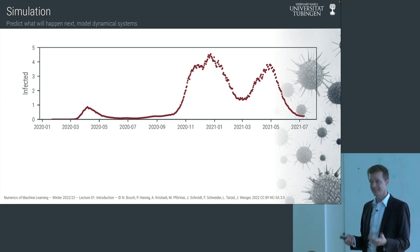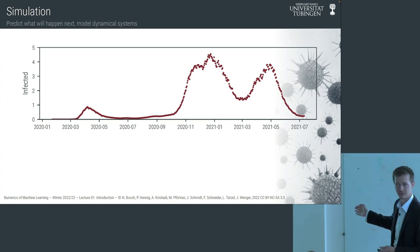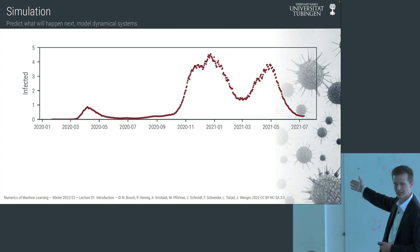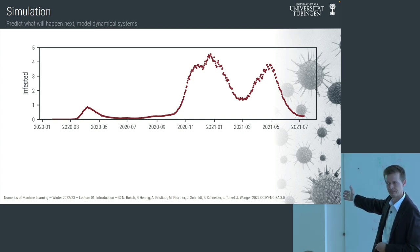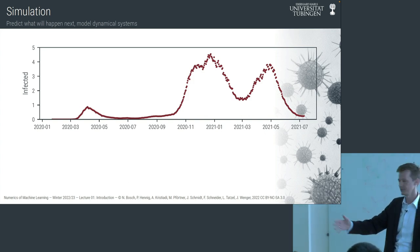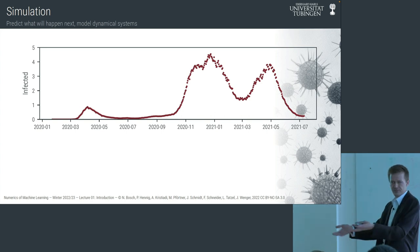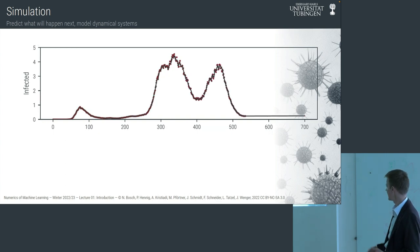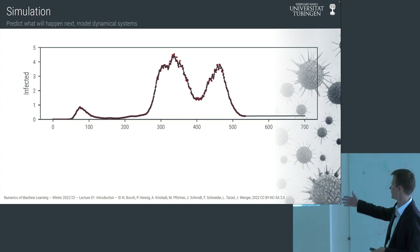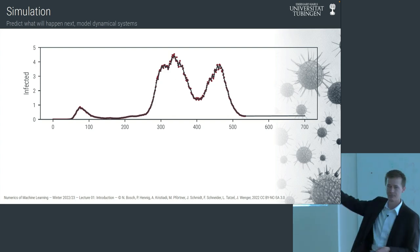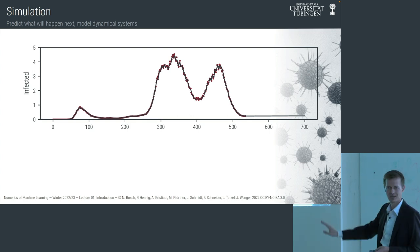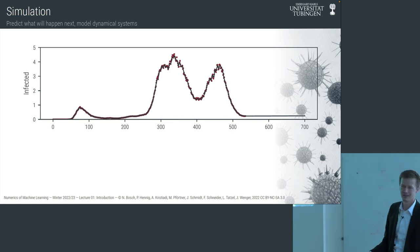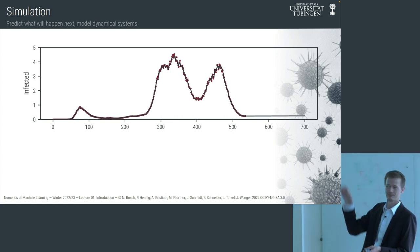This is a prediction problem — exactly what machine learning is made for. It's a simple problem: about 500 points on a one-dimensional axis. If you're a machine learning expert and not a numerical mathematician, your first approach might be to use a deep neural network — a ReLU network to regress on this function and predict what comes next. This doesn't work. ReLU networks extrapolate linearly, so you get a flat or linearly extrapolating line, which is useless. A Gaussian process with a fancy kernel won't work either — it just produces some exponential increase or straight line. None of it is useful.